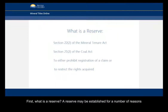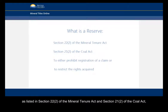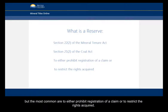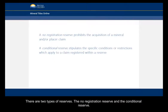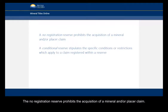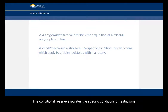First, what is a reserve? A reserve may be established for a number of reasons, as listed in section 22 of the Mineral Tenure Act and section 21 of the Coal Act, but the most common are to either prohibit registration of a claim or to restrict rights acquired. There are two types of reserves: no registration reserves and conditional reserves. A no registration reserve prohibits the acquisition of a mineral and/or placer claim, and a conditional reserve stipulates the specific conditions or restrictions which apply to a claim registered within the reserve.